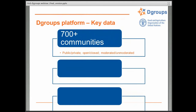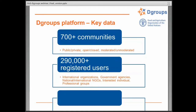At the moment, there are more than 700 communities and they take different shapes and forms – public or private, closed or open to the public, moderated or unmoderated, from many different sizes. Some have thousands of members, while others are very small working group-type groups of just a couple of people, really as per the need for that particular group. Overall, there are almost 300,000 registered users on the dGroups platform, ranging from members of international organizations or government agencies to local and national level NGOs, interested individuals, and professional groups – a very diverse user base.